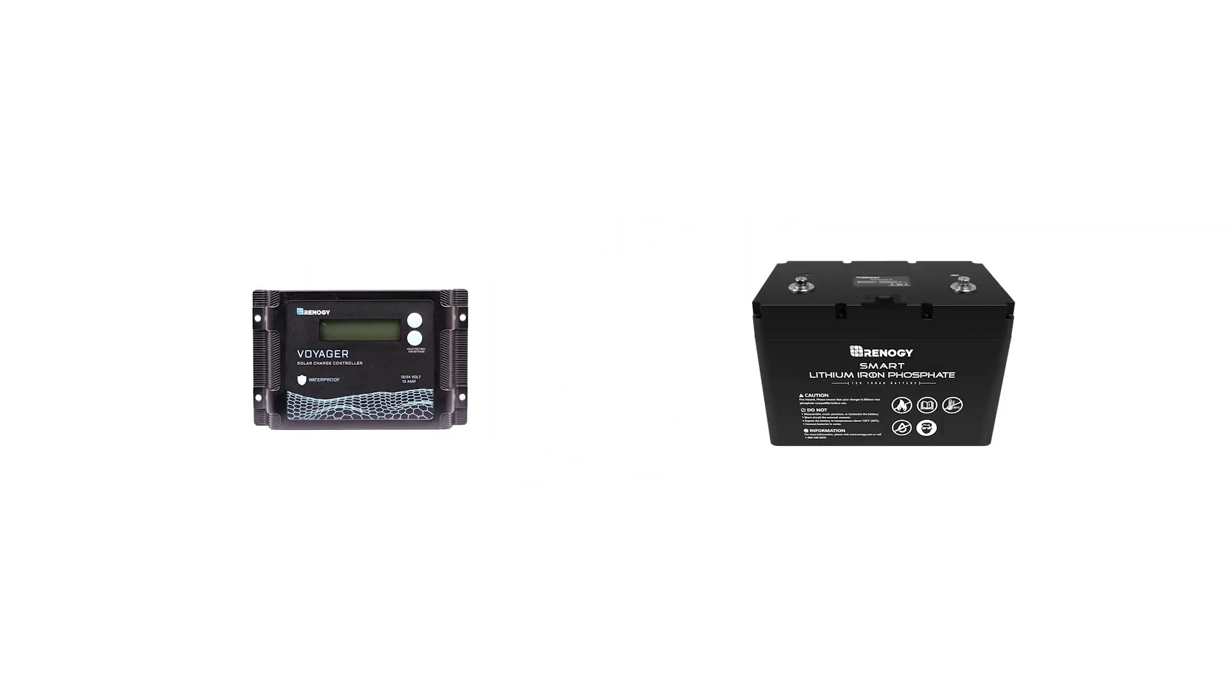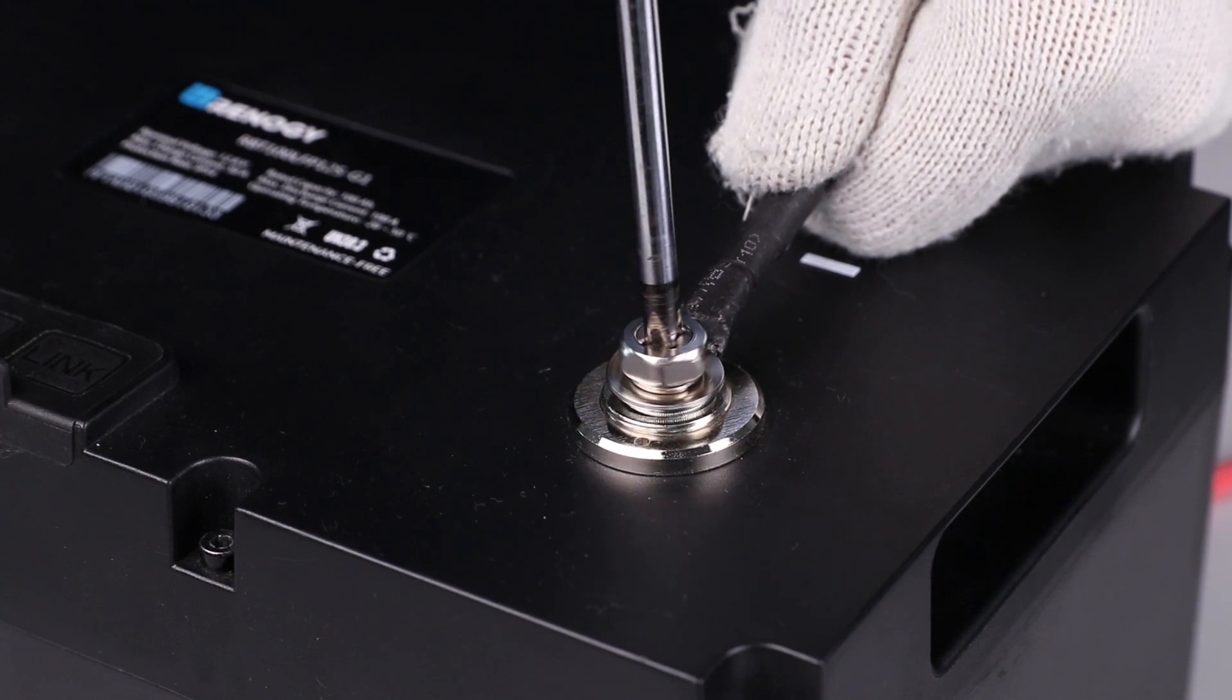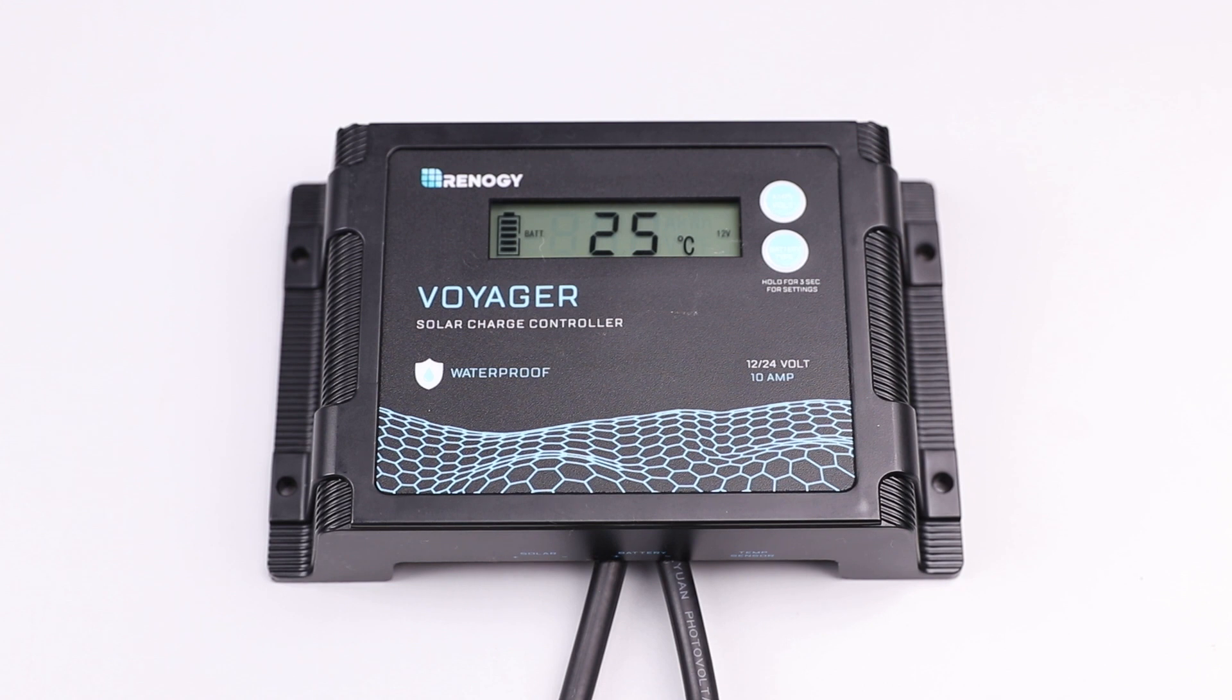We will start by connecting the Voyager to a 12V battery. The tray cable will be used to connect the Voyager and the battery. Connect the tray cable to the Voyager first, then connect one tray cable at a time to the battery. The controller will power on as soon as the battery is connected.